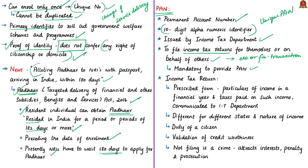The return of income or income tax return is a prescribed form through which the particulars of income earned by a person in a financial year and taxes paid on such income are communicated to the Income Tax Department. It also allows the carry forward of losses and claim refunds from the Income Tax Department. Different forms of returns are prescribed for different statuses and natures of income. It is important to file the return of income — it is our duty as a citizen and it earns dignity for us by consciously contributing to the development of the nation. It also validates the credit worthiness of a person before financial institutions.